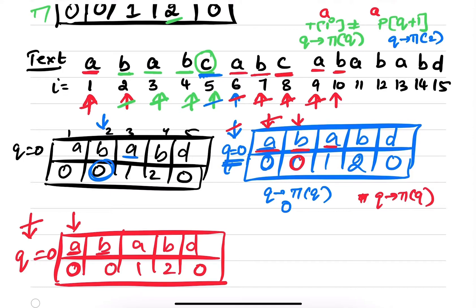Is this matching with this B? Yes, it's matching. Therefore increment Q, increment I. Is this A matching with this A? Yes, it's matching. Therefore increment Q, increment I. Is this B matching with this B? Yes, it's matching. Therefore increment Q and increment I.